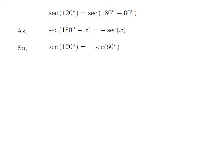Let us apply the above identity for secant of 120 degrees. Here x is 60 degrees. So, secant of 120 degrees is equal to minus secant of 60 degrees.